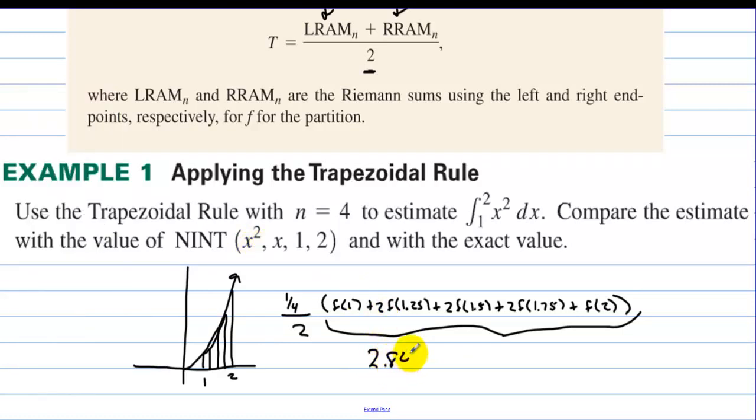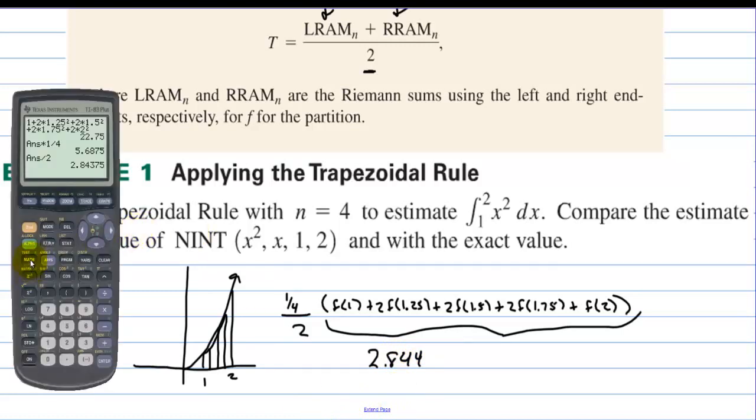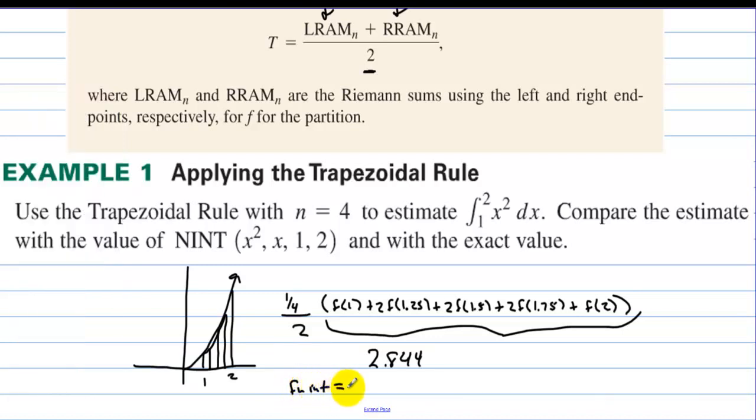So 2.844. Now let's use NINT. Let's go math number 9. It's actually fnInt. And the function is x squared. And the variable is x. And we're integrating from 1 to 2. And the answer is 2.333. fnInt gives us 2 and 1 third. Well, if we integrate x squared, we get, so now let's do the actual answer.